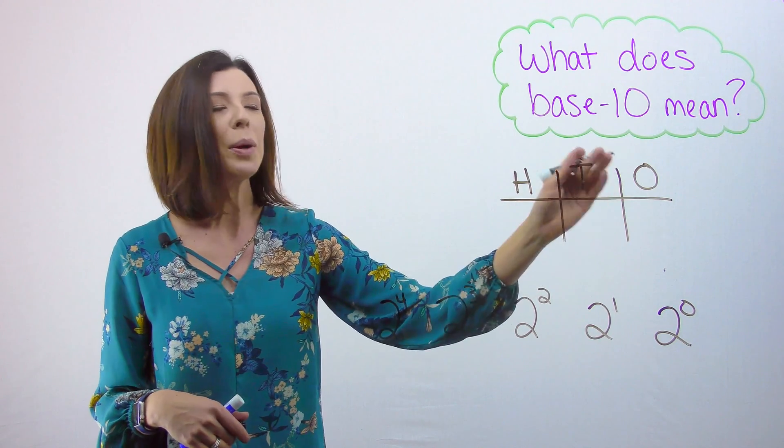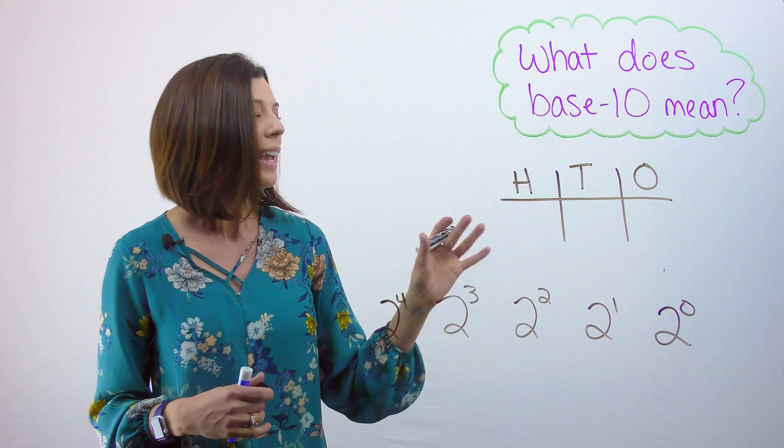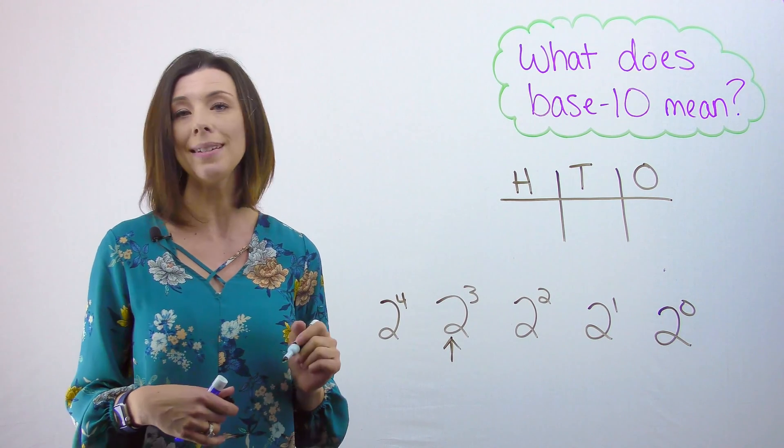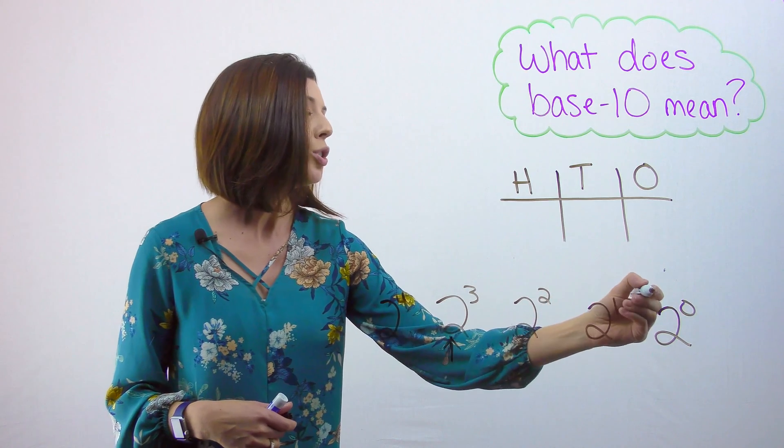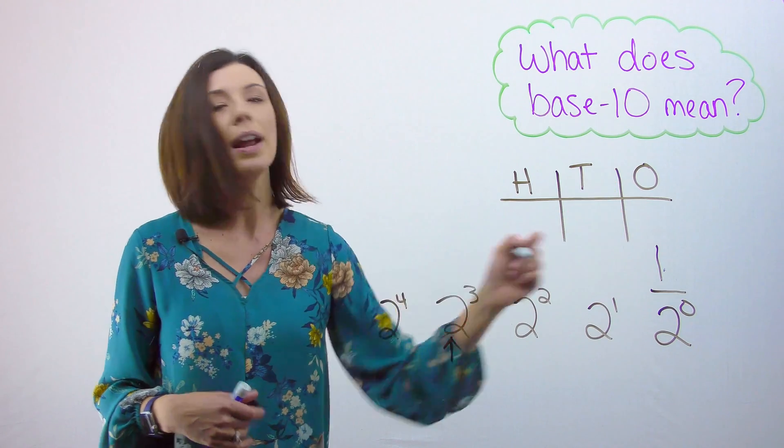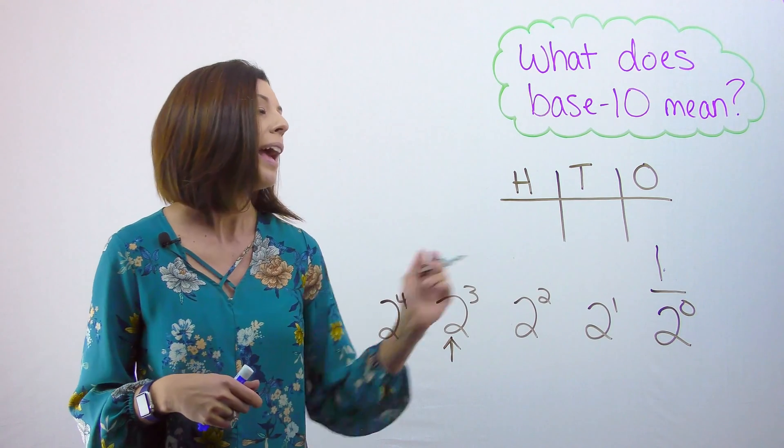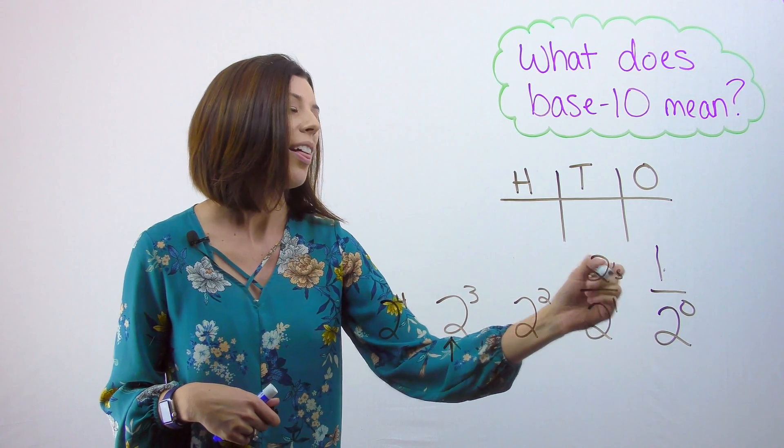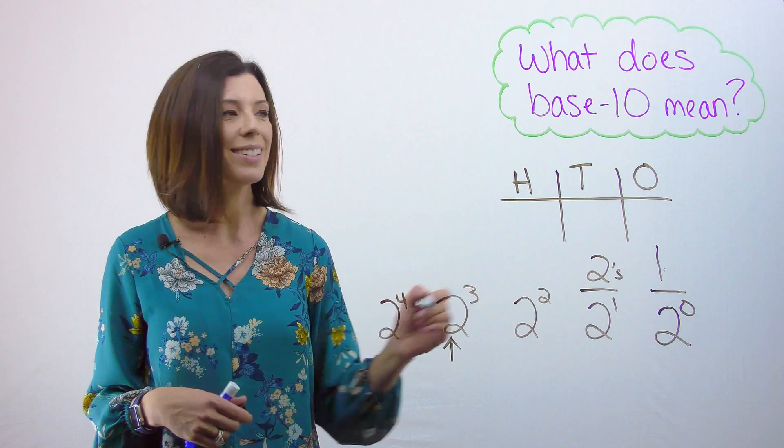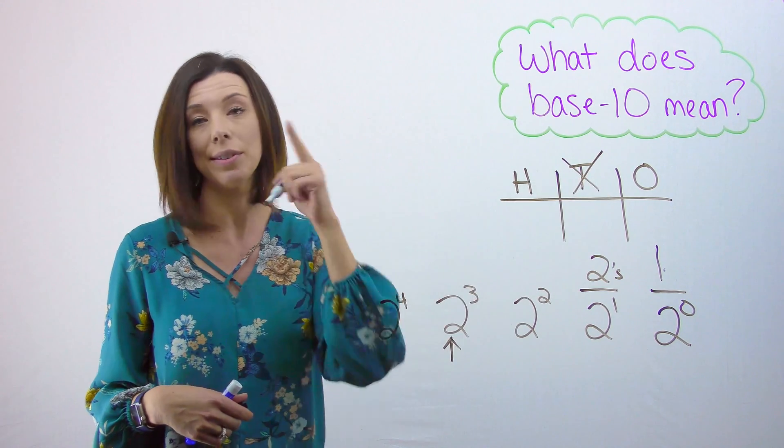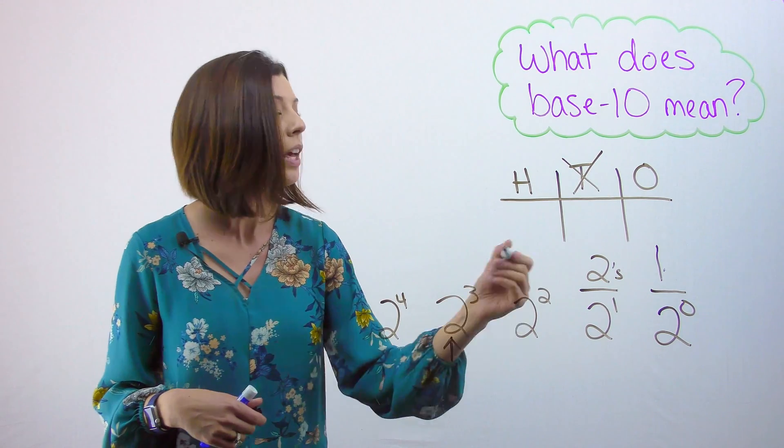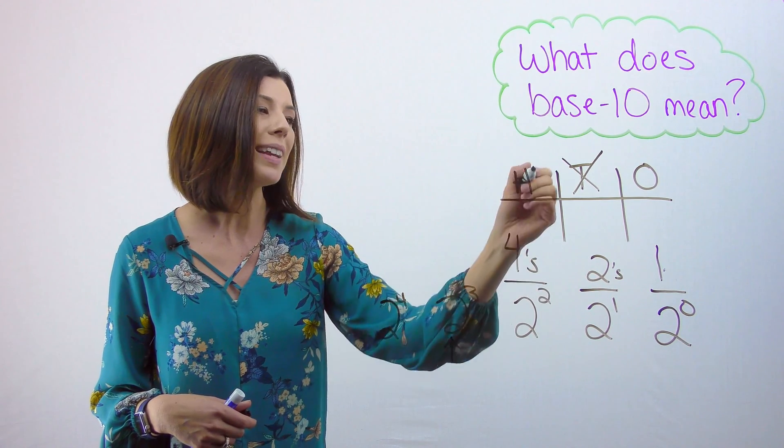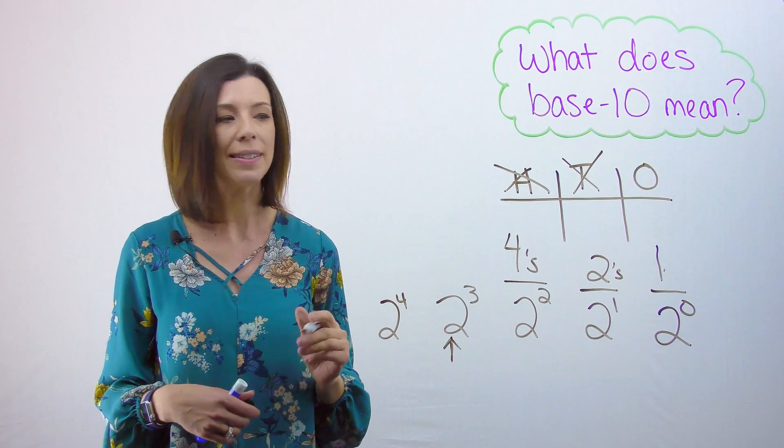Now let's go back to our 1s, 10s, and 100s chart. If I'm in base-2, and again, I know this because there's my base. If I'm in base-2, 2 to the power of 0 is still 1. I'm still okay calling it 1s. However, 2 to the power of 1 is 2. That's the 2s place, not the 10s place, although I still have a T there, but you get my point. 2 squared is now the 4s place, not the 100s place.